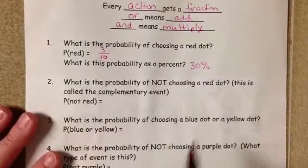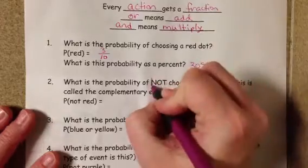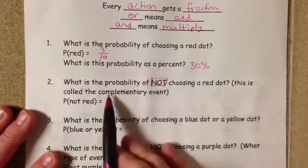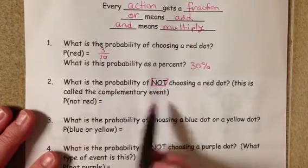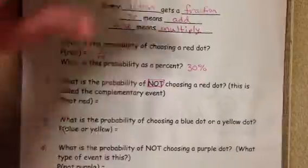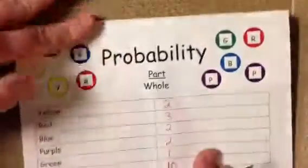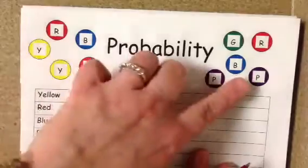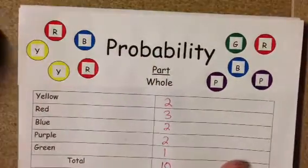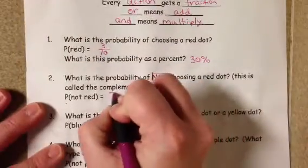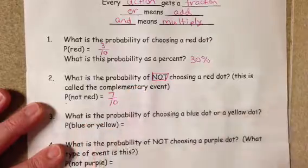What is the probability of not choosing a red dot? This is called the complementary event — the probability of not red. This is every other color. There are three red dots, so all the other colors — there are seven that are not red. So the probability of not choosing red is seven out of ten.